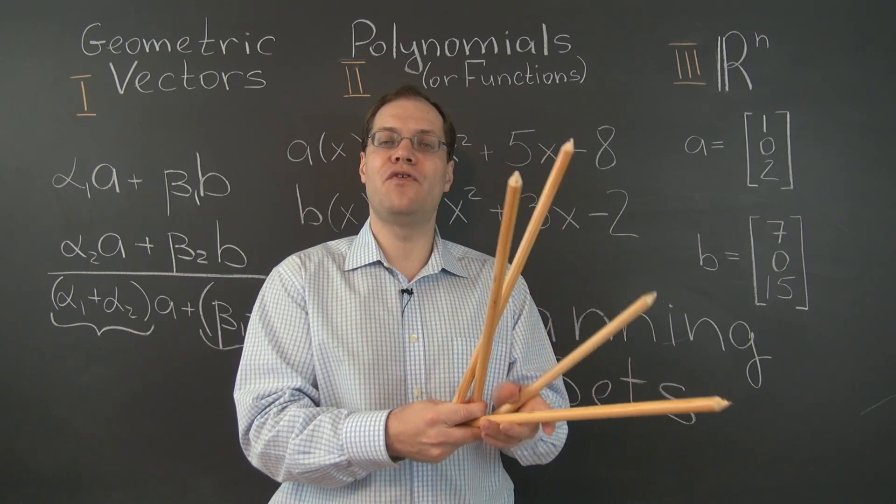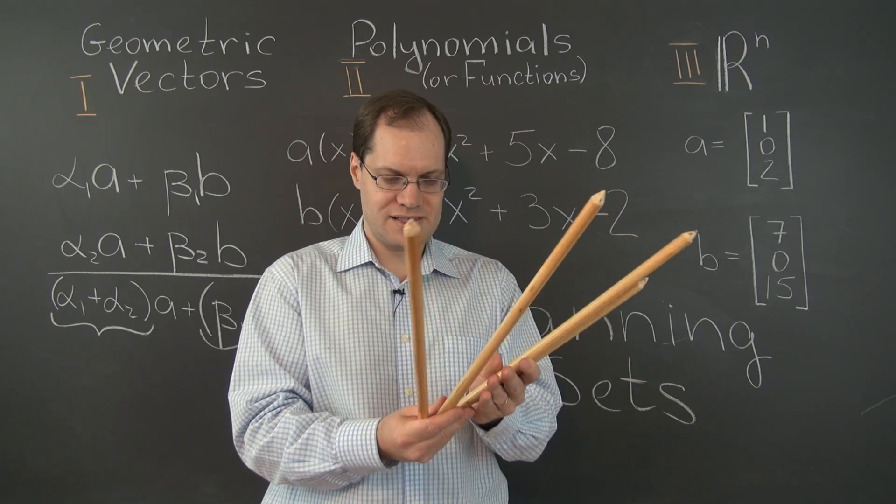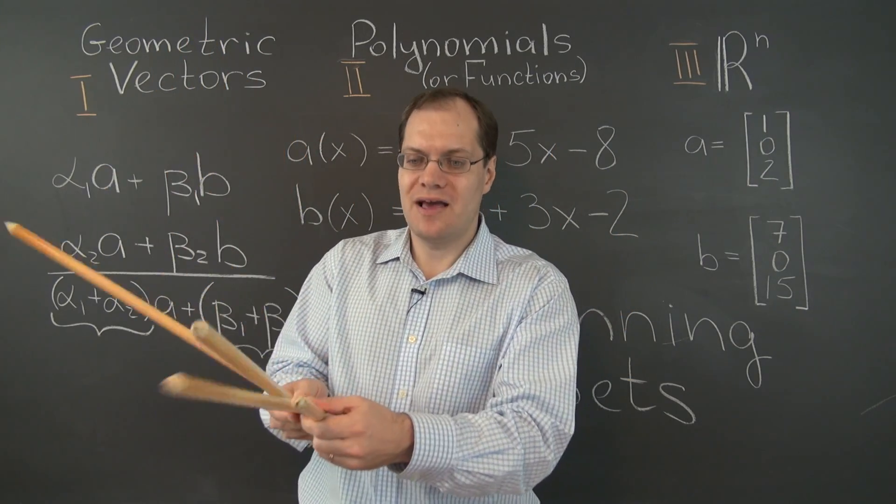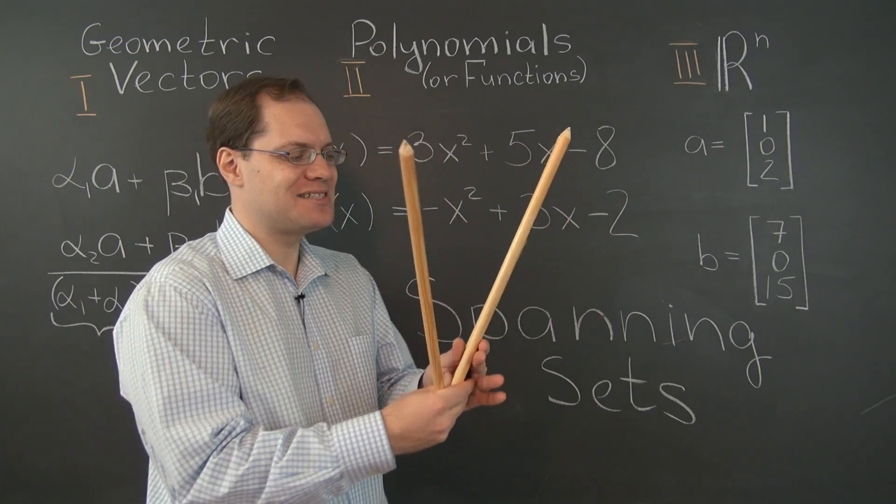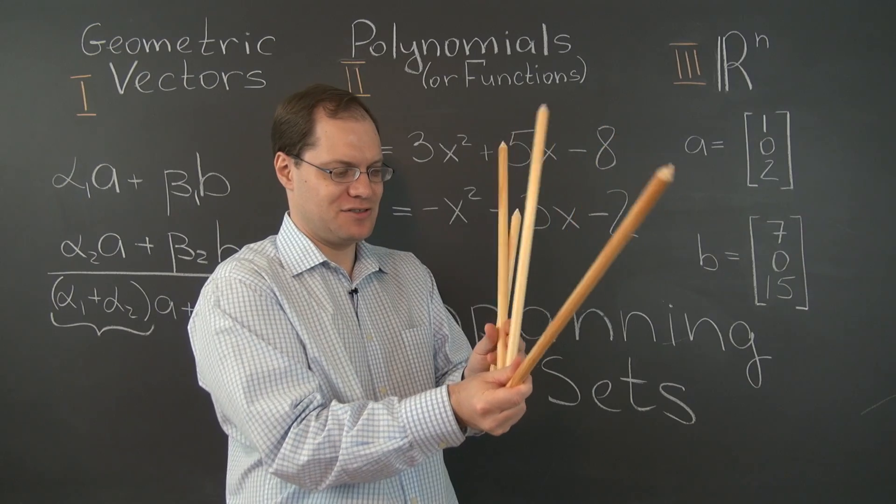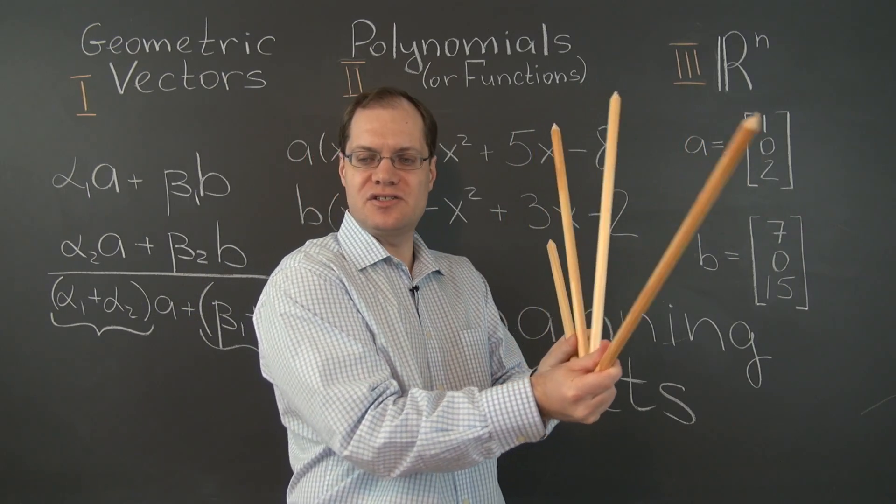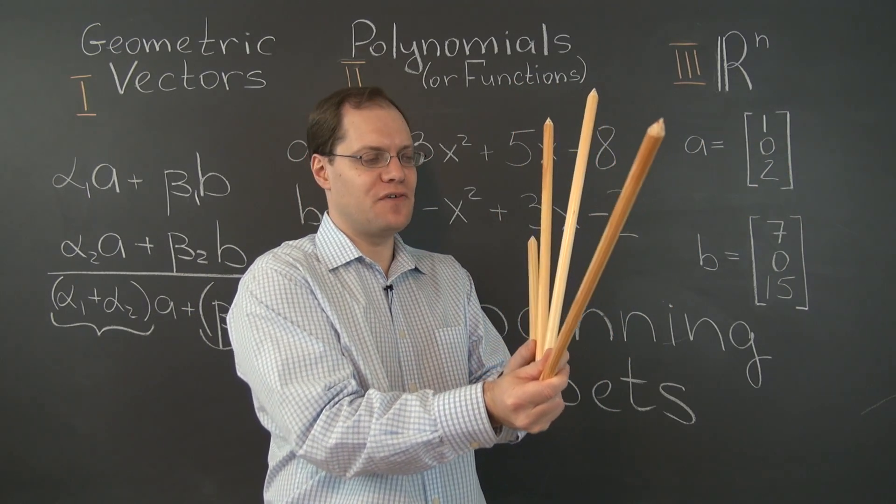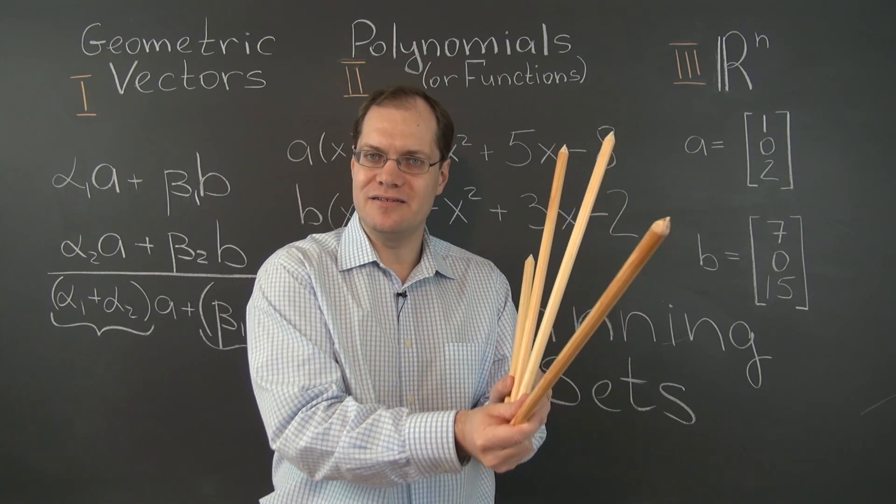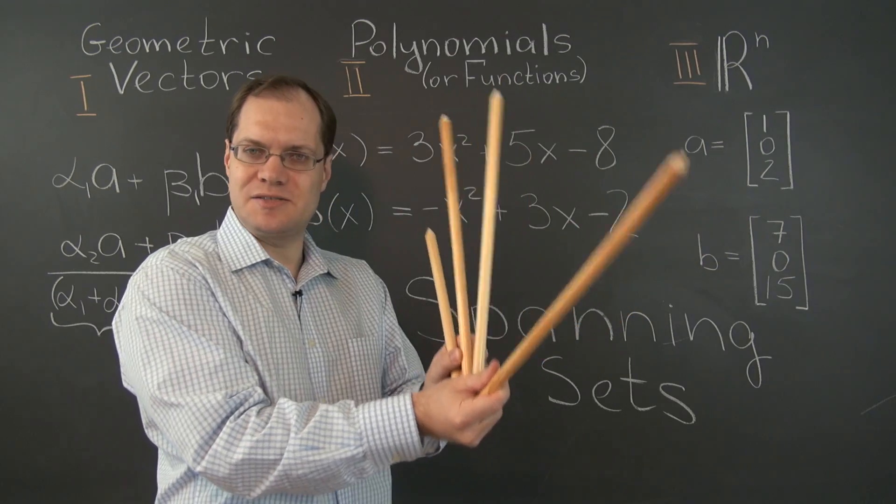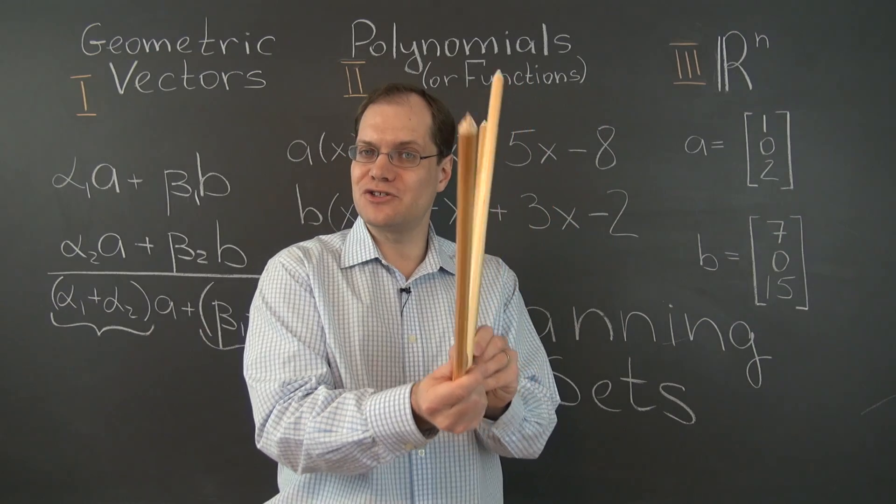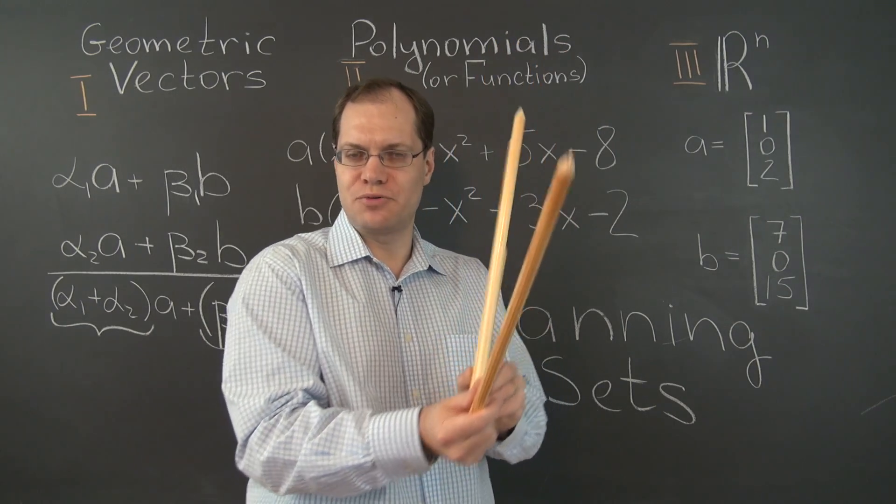Here's another example. What if all four of these vectors are in the same plane? Would that still be a spanning set for the space? Let me actually do it. And the answer is no, because these four vectors can only generate other vectors in the same plane. So no, this is not a spanning set for the three-dimensional space. So having a sufficient number of vectors is not enough. They also have to be arranged properly.